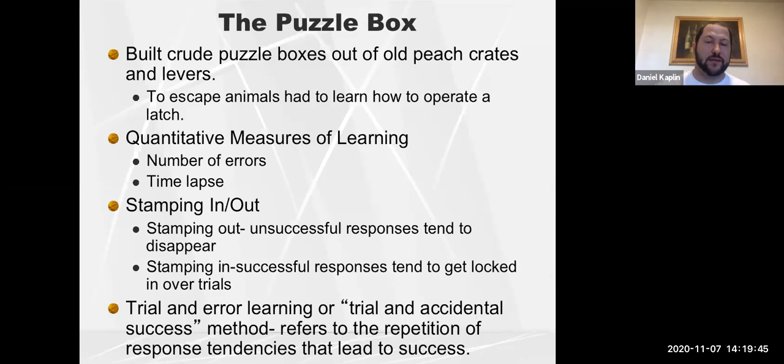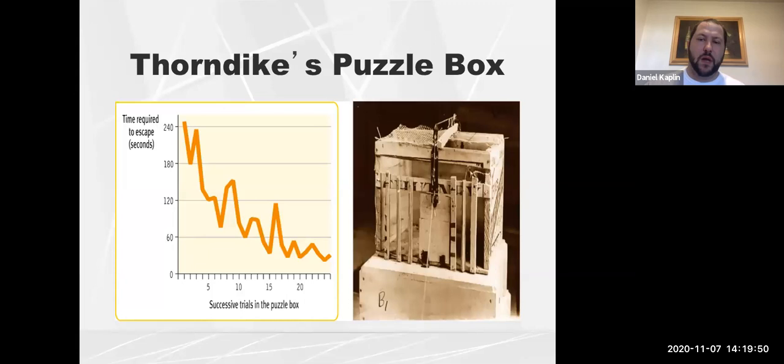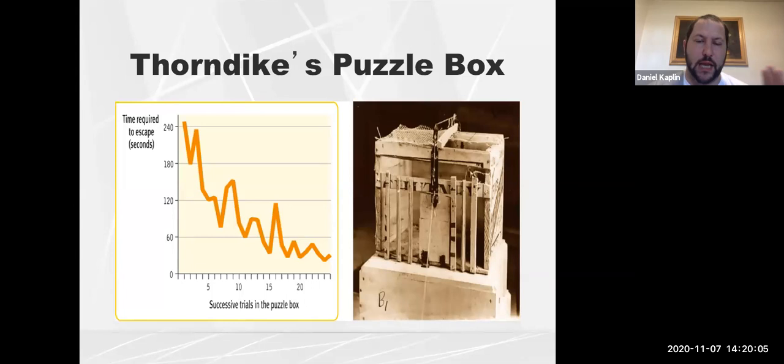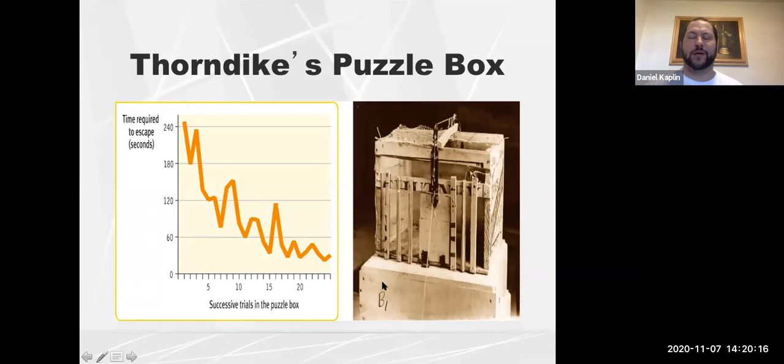Here is a picture of Thorndike's puzzle boxes showing the string, the rod that would lift, and the gate that would open. If there were flashes of insight, the time-to-solution graph on the left should drop immediately. Because the curve was smooth and gradual, Thorndike concluded that learning happens through trial and error, not insight learning.